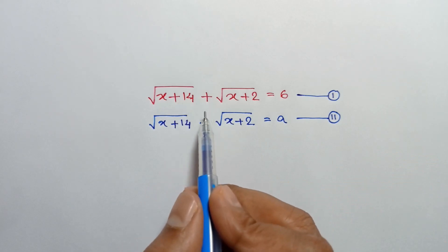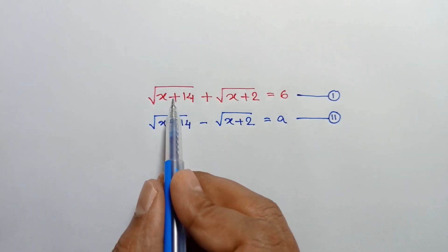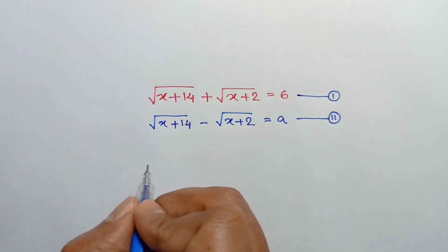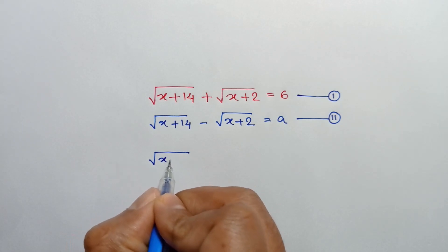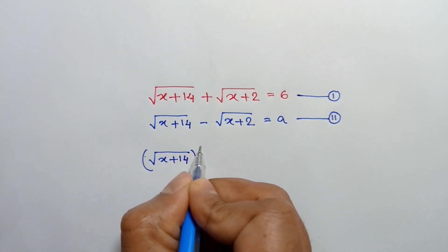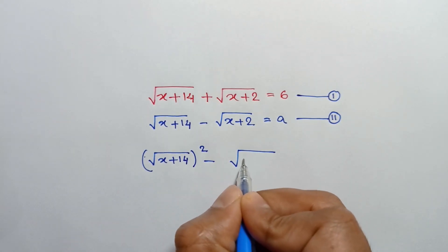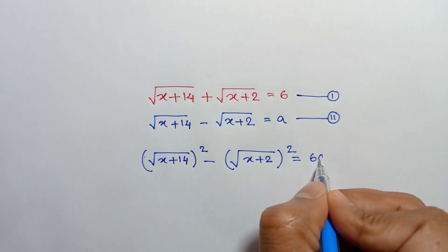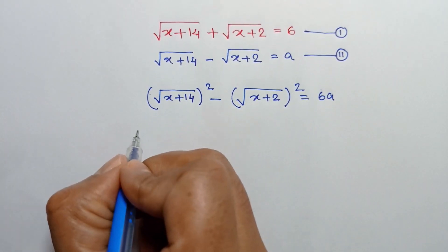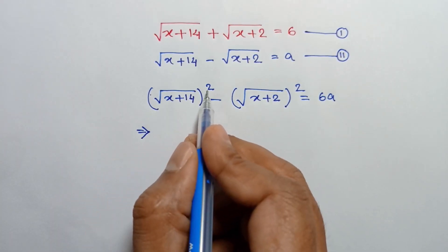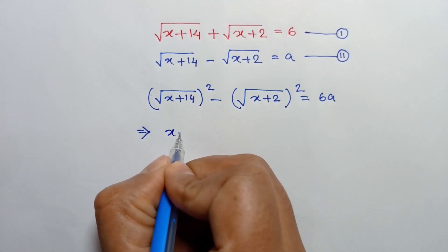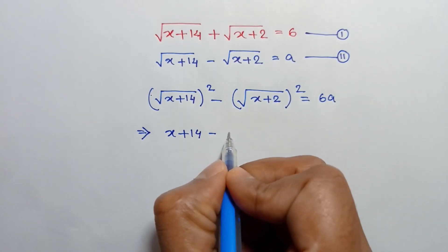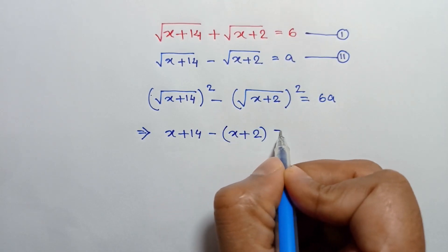If we multiply equation 1 and equation 2, we can write (a plus b) times (a minus b) is a squared minus b squared. So we can write square root of x plus 14 whole squared minus square root of x plus 2 whole squared is equal to 6 times a, which is 6a. The square root and square cancel out, leaving x plus 14 minus x plus 2 equal to 6a.